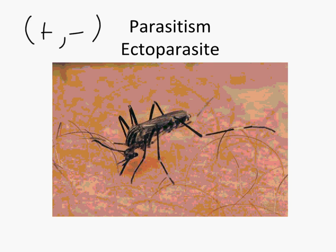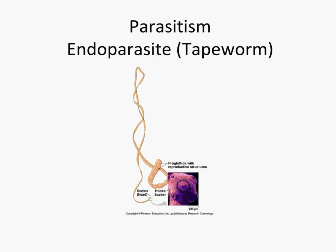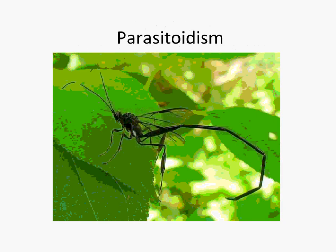Parasitism is a little different from predation in that the parasite is not initially trying to kill the host. The parasite steals resources from its host without destroying it completely. There are different kinds: ectoparasites are outside the host, like a mosquito; endoparasites are inside, like a tapeworm. Then there are parasitoids, where an insect lays eggs inside its host so they hatch, eat the host's insides, and eventually burst out.